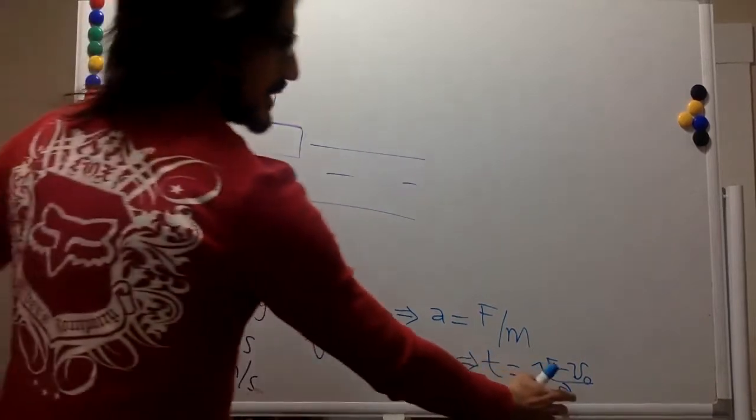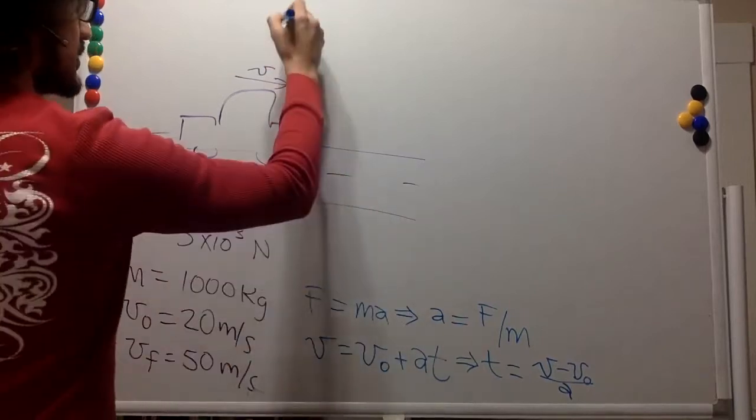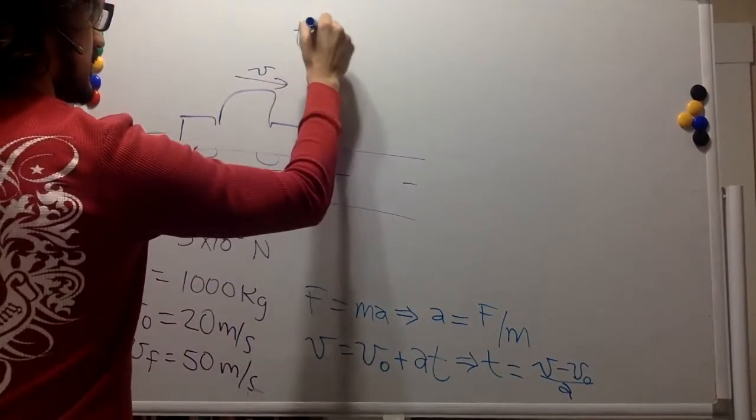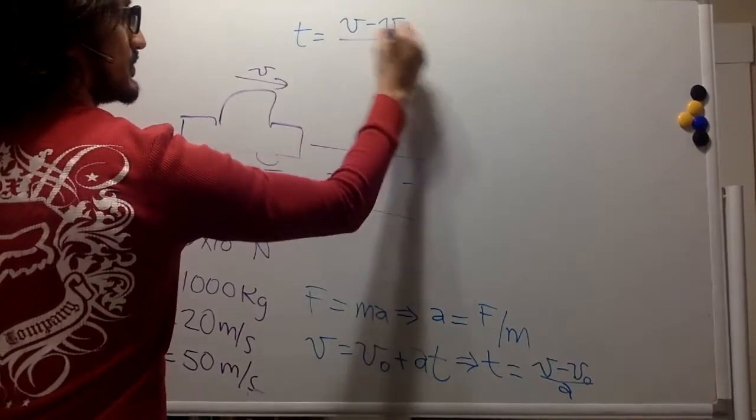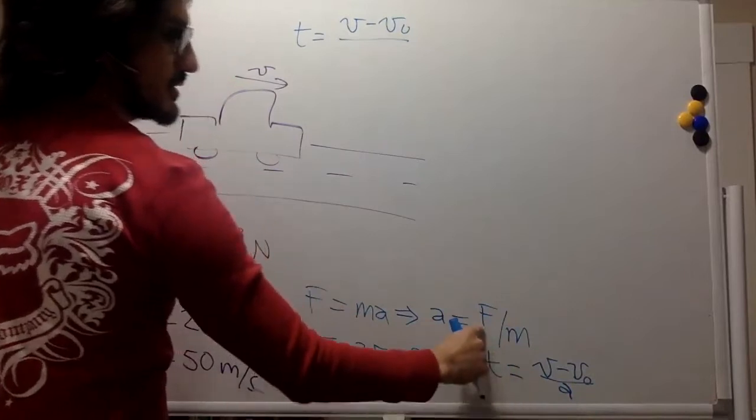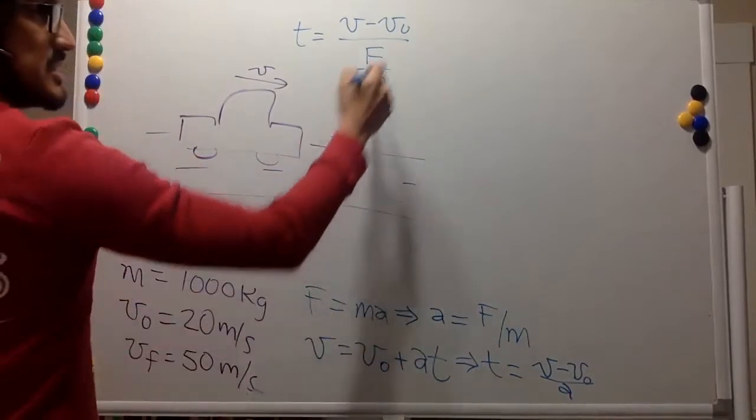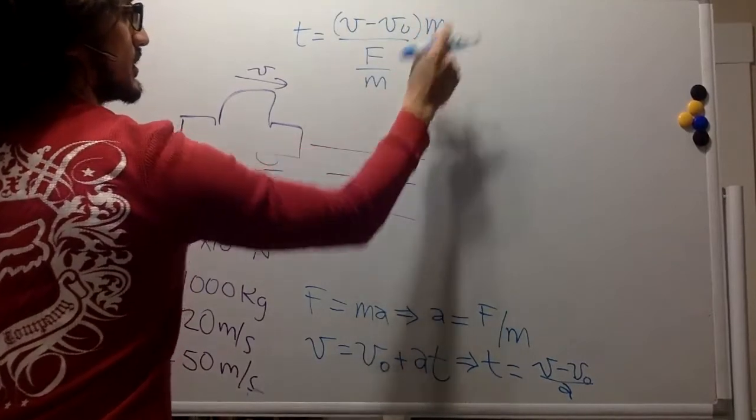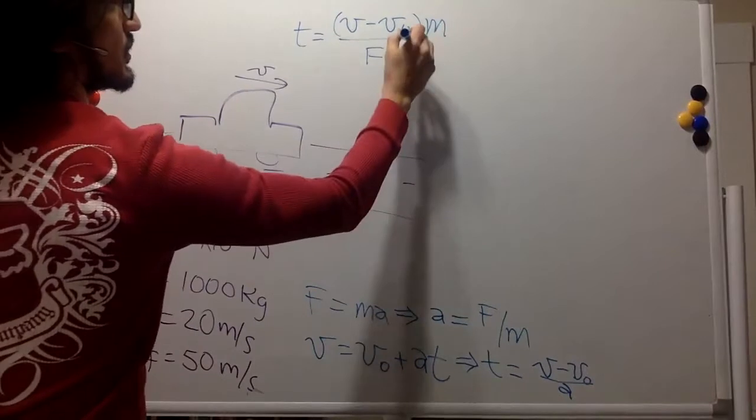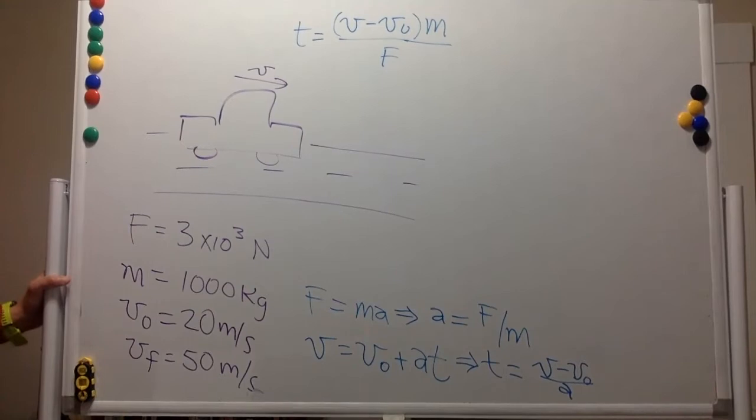If you want to make it a little bit further algebraically, you can say that time is v minus v0 divided by, and this acceleration is the force divided by the mass. So we can move this one over here. So we multiply times the mass, and we just divide by the force.